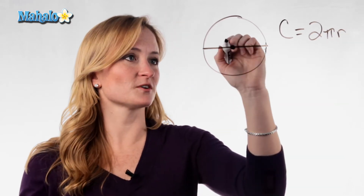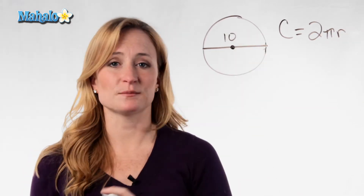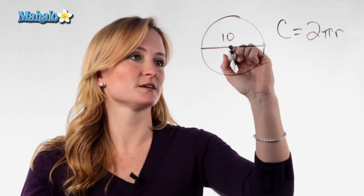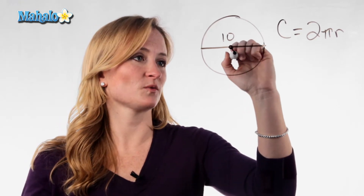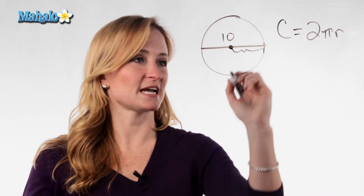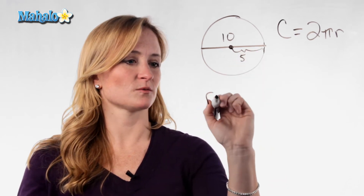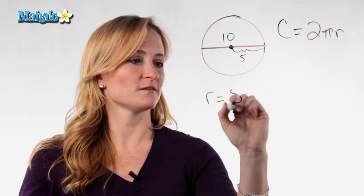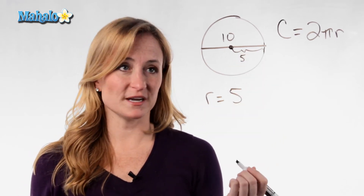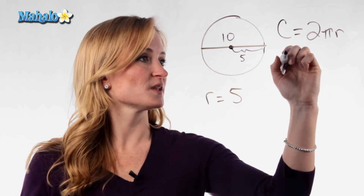So if this were your circle and you had a diameter of 10, you'd have to find the radius. We know that the radius is half of the diameter, so in this case the radius would be 5. Once you've found your radius, go ahead and plug it back into the formula.